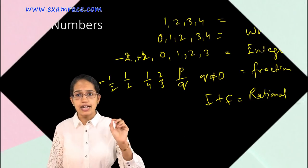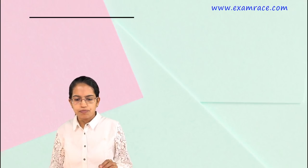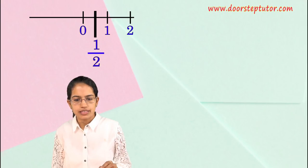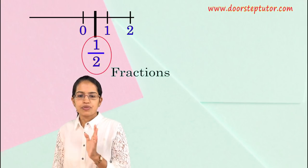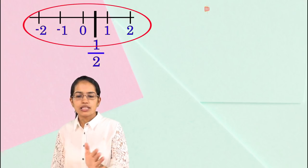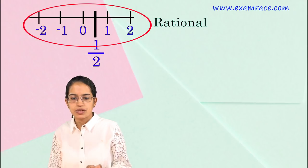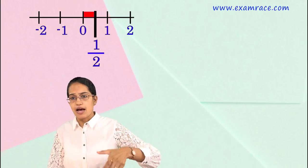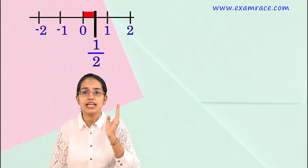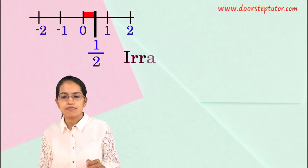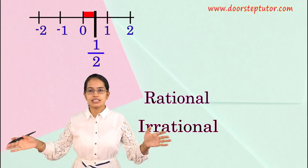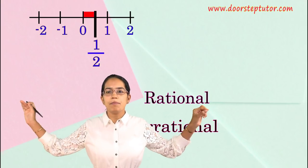On a number line with 0, 1, 2, you can place fractions like one-half in between. Negative numbers are also there. All of these are rational numbers. But between 0 and one-half there is still a gap — even if you add more fractions, there would still be gaps. Those gaps are filled by irrational numbers. Rational numbers and irrational numbers together form the complete system, which is known as real numbers.